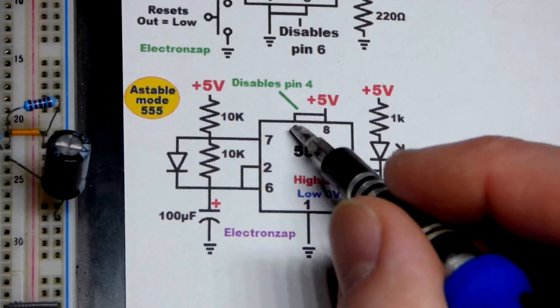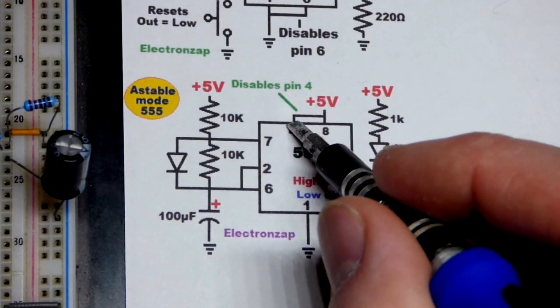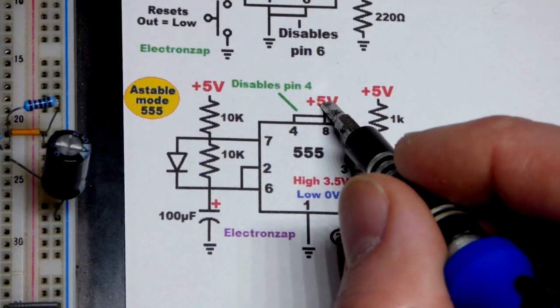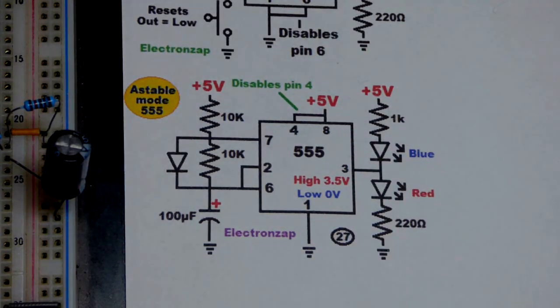Of course, if you give a low input to pin 4, close to ground, it will just hold the output low. You don't want that, so we just connect it directly to the positive supply to disable it.